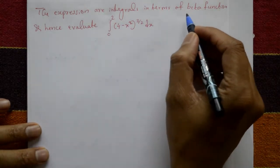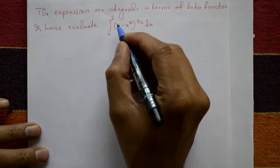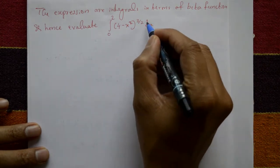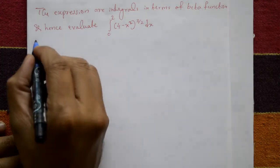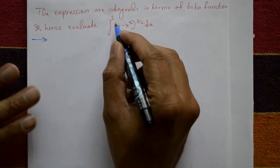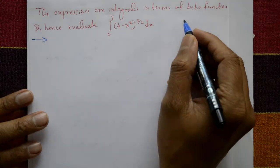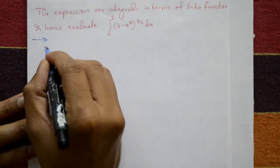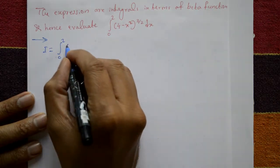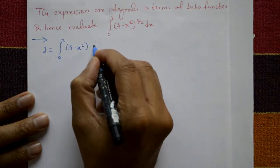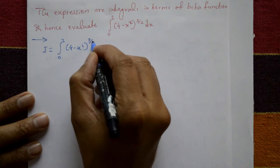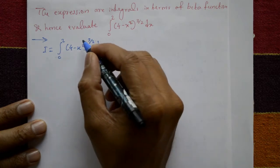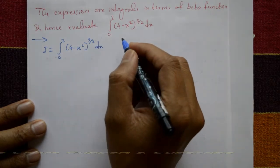Express the integral in terms of beta function and hence evaluate the integration from 0 to 2 of (4 minus x squared) to the power 3 by 2 dx. The given integral is an algebraic function which will be converted into a trigonometric function.